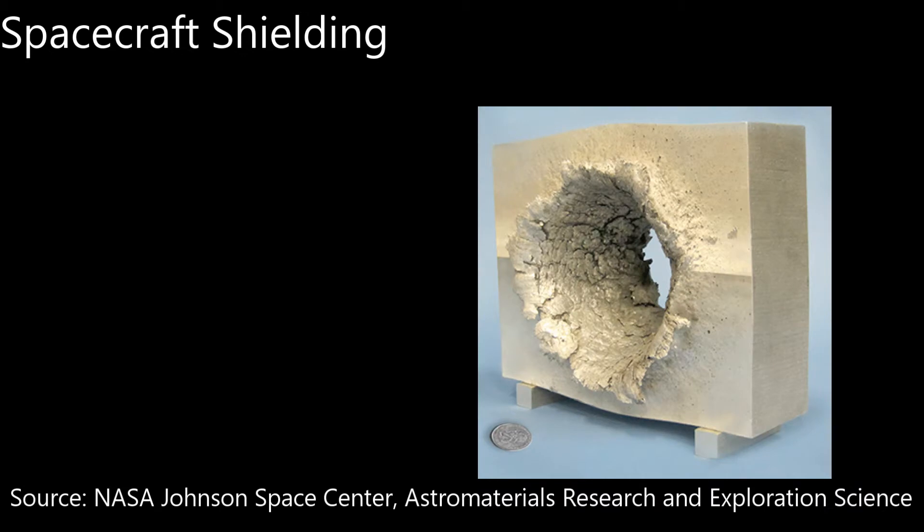Initially, monolithic shields were used where single layers of material as part of the spacecraft's outer walls are used to absorb the impact. However, this would translate to increased spacecraft's weight, which is not ideal.